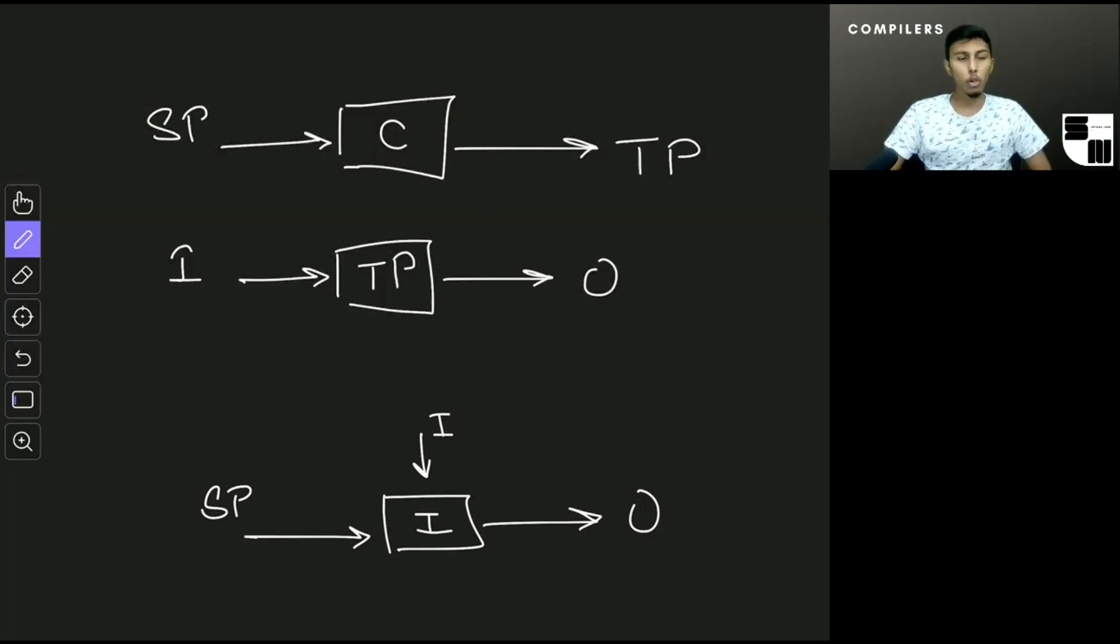However, what you can also do is just convert from the language that you designed to C code or C++ code or Java code or Python code. And then just use the corresponding compiler to convert from that language to a machine language. So there could be different compiler implementations. There could be compilers which convert from one human understandable language to another human understandable language. And these compilers also have a lot of use.